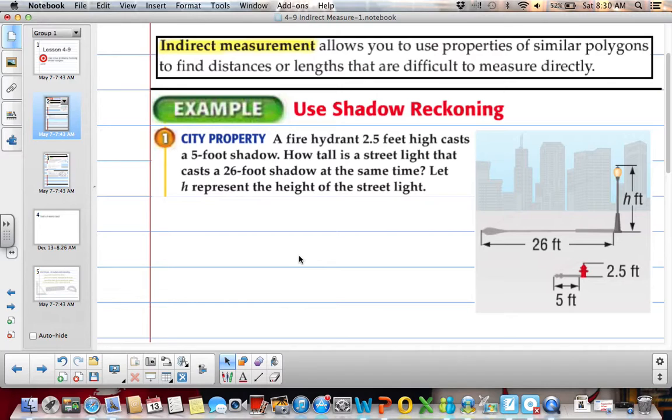So if we're given this problem, a fire hydrant 2½ feet high casts a 5 foot shadow. So over here we have our fire hydrant, which is 2½ feet high, and our shadow, which is 5 feet.